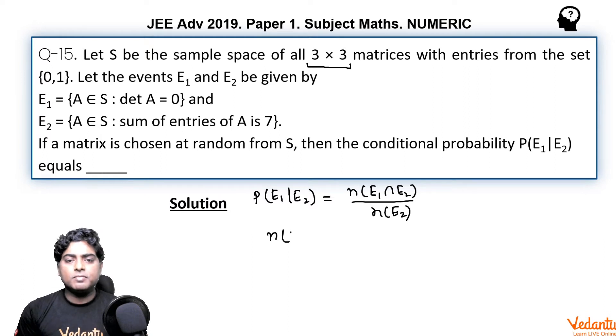So number of cases in E2 or for E2 to happen, there must be 7 ones and 2 zeros. Then only the sum of all the 9 entries would be 7. So number of cases for E2 is number of such matrices in S, sum of all 9 entries is 7.